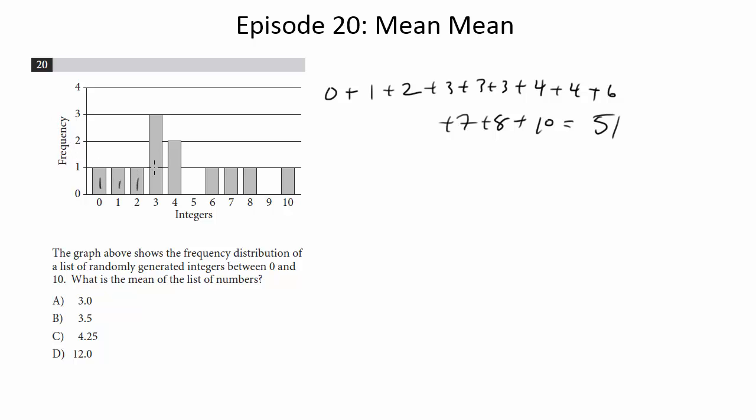So we have 1, 2, 3, 4, 5, 6, 7, 8, 9, 10, 11, 12, right? Because you've got to count again - there's one of these, one of these, one of these, three of these, two of these, and then 1, 1, 1, 1.